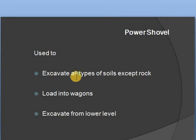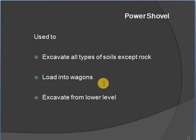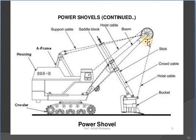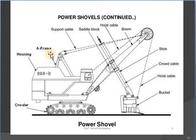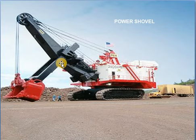A power shovel is used to excavate all types of soils except rocks, and to load into wagons — it excavates from the lower level. Key parts: bucket, hoist cable, crowd cable for lifting, stick, wheels, boom, saddle block, support cable, A-frame, housing, crawler, and operator room. This machine is also used in large construction companies.